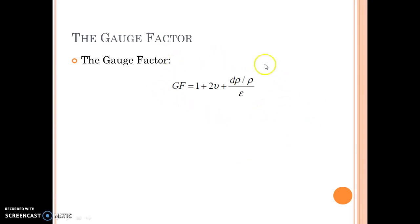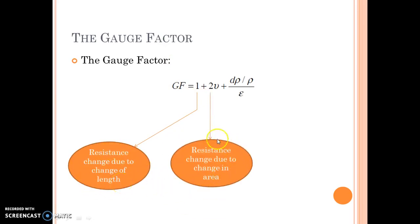This is the final formula for strain gauge, where this factor is because of resistance change due to change of length, this is because of resistance change due to change in area, and this is because resistance change due to piezoresistive effect.